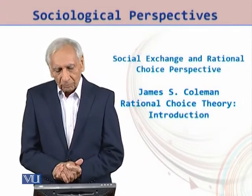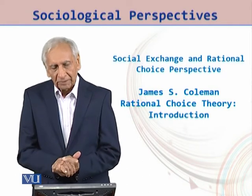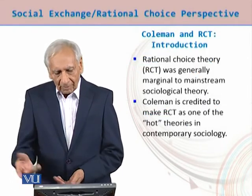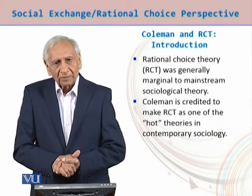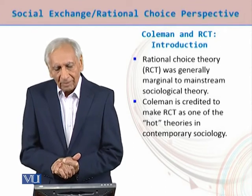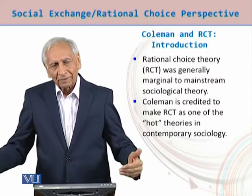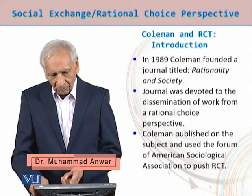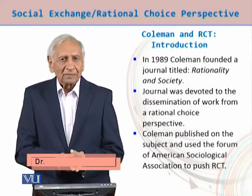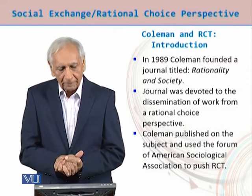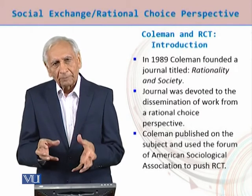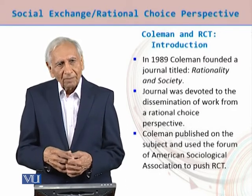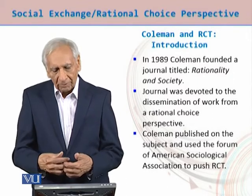We move on to James Coleman and his Rational Choice Theory (RCT). RCT was generally marginal to mainstream sociological theory, and Coleman is credited with bringing it into the mainstream as one of the hard theories in contemporary sociology. In 1989, he established a journal titled 'Rationality and Society,' which was interdisciplinary and devoted to the dissemination of work from a rational choice perspective.